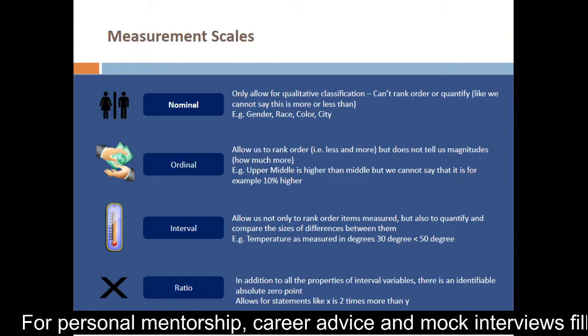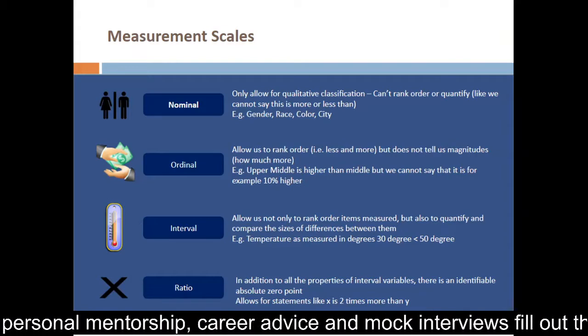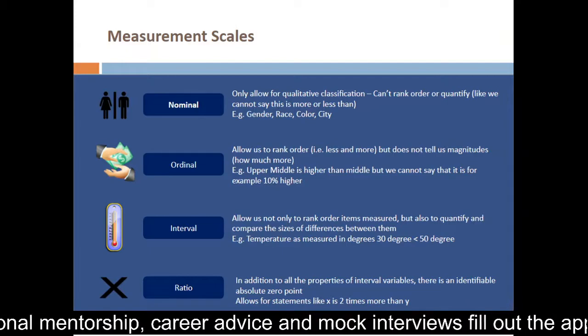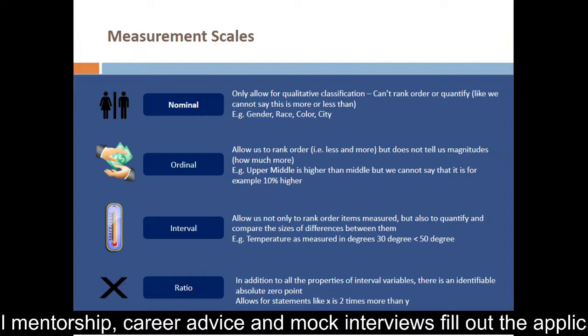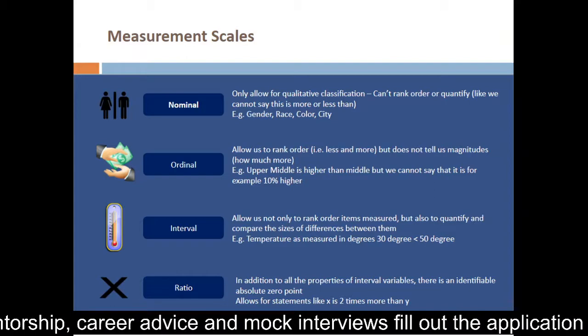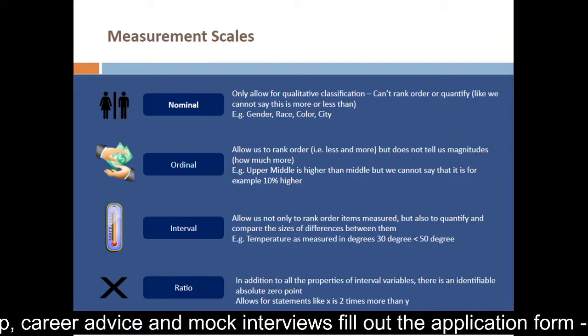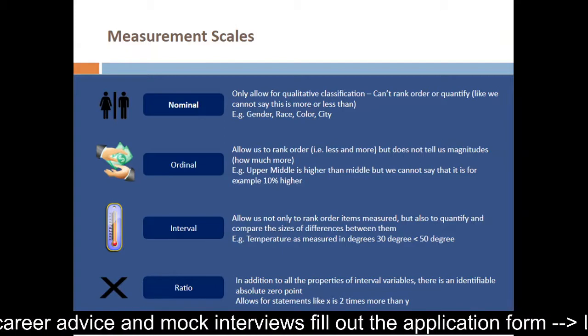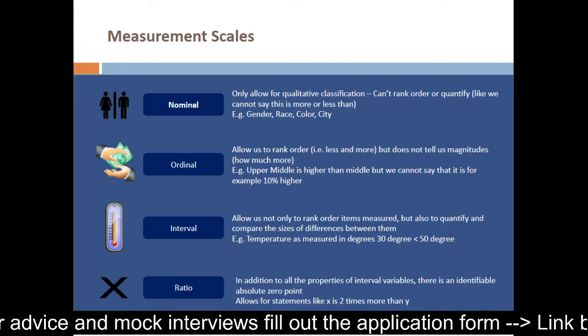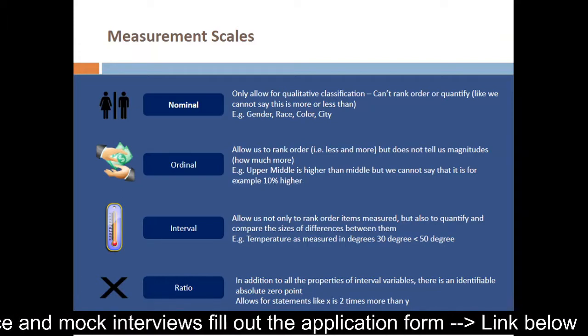One interesting measurement scale here is the ratio scale. In addition to all the properties of the interval variables that we have seen above, what differentiates a ratio scale is that there is an identifiable absolute zero point. What this means is that we have a natural zero that we are looking at. This allows us for statements like X is two times more than Y. When we say that, what we are trying to mean is that we are looking at a natural zero.